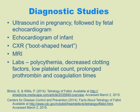Labs show polycythemia with high hemoglobin and high hematocrit. There are also decreased clotting factors, low platelet count, and prolonged coagulation time, so there is bleeding potential. That polycythemia causes the blood to be very thick and viscous, which can lead to complications such as stroke if this goes untreated.